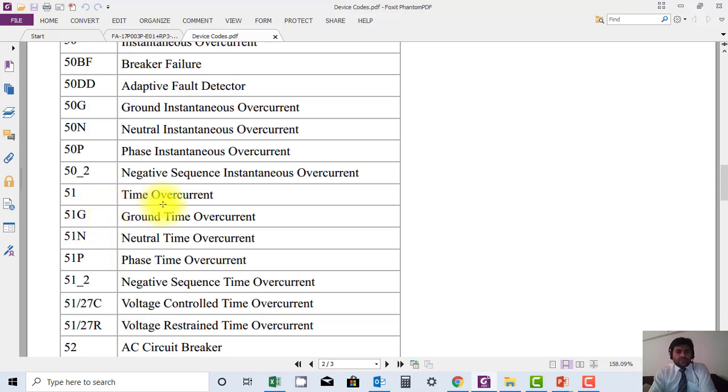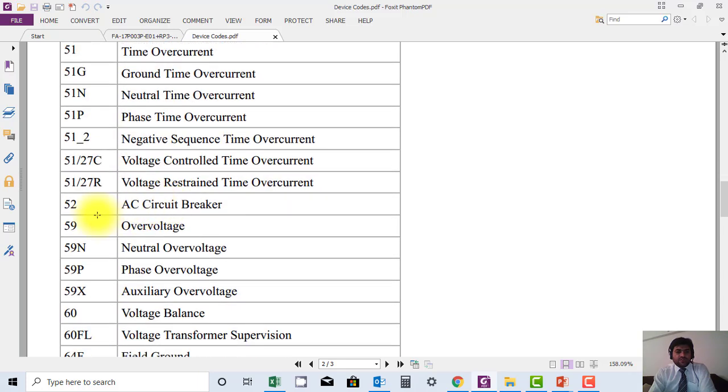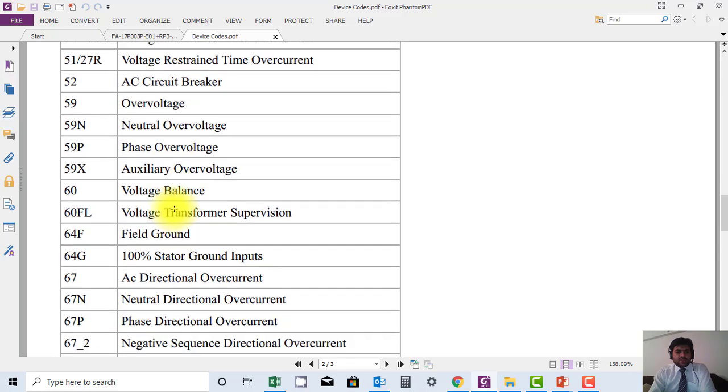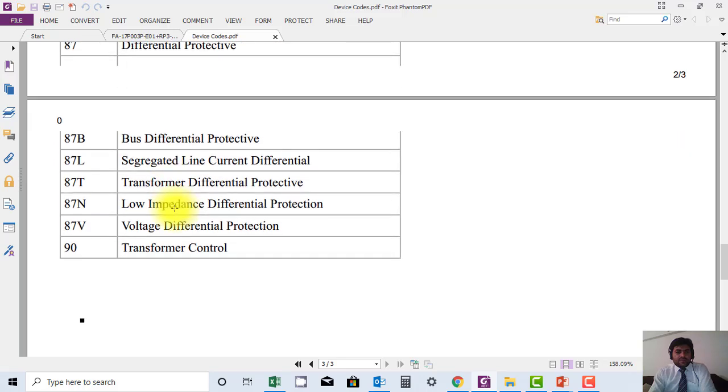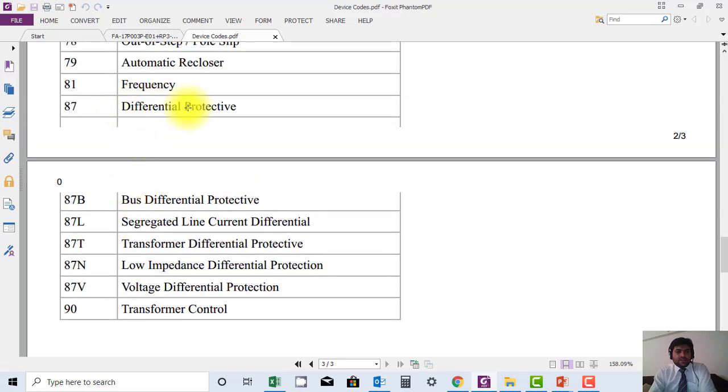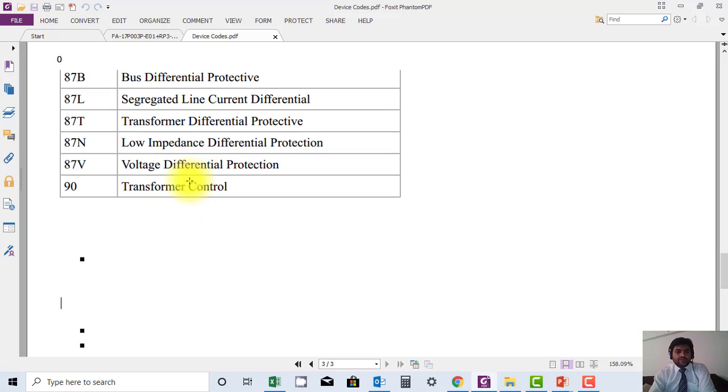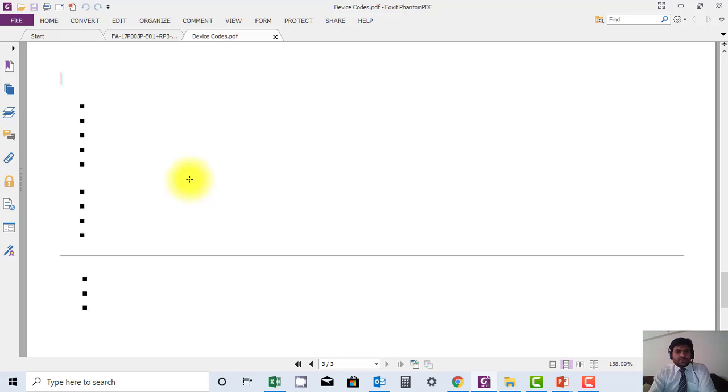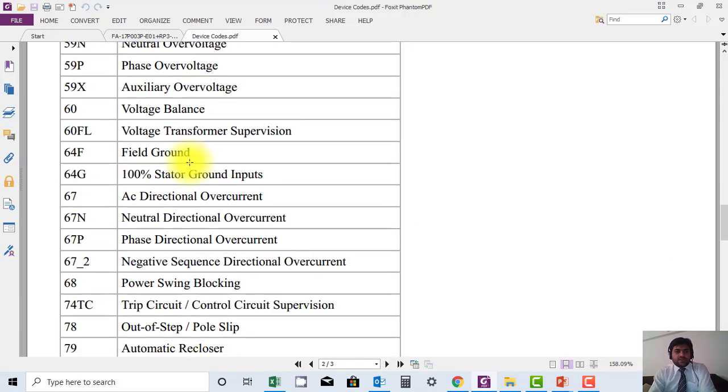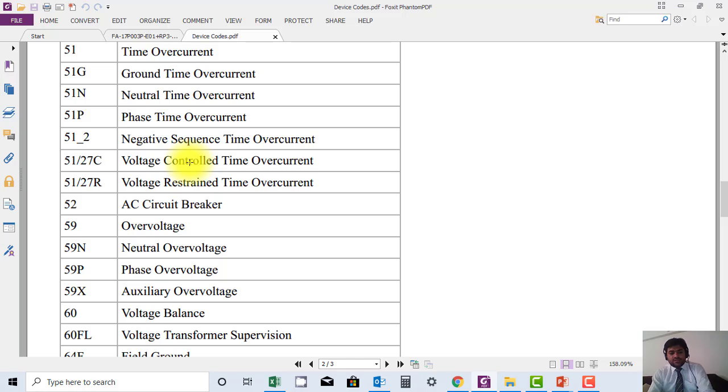Code 51 is for time overcurrent, 52 is for AC circuit breaker as I mentioned already. Then we have 87, which is very famous. This is differential protection, used for different types of bus or transformer differential protection. You can download this table and study it. This will be really useful for preparation of exams.